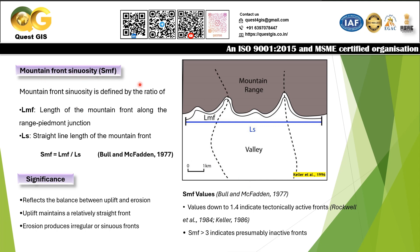Mountain front sinuosity is defined by the ratio of the length of the mountain front along the range-piedmont junction (Lms) to the straight-line length of the mountain front (Ls). For example, you take two points — point A and point B — and measure the length of the curvature between them; this gives you Lms. Then you take the straight-line distance between point A and point B, which is Ls. When you divide Lms by Ls you get a value called Smf. This was given by Bull and McFiddell in 1977, and also defined by Keller et al. in 1996.